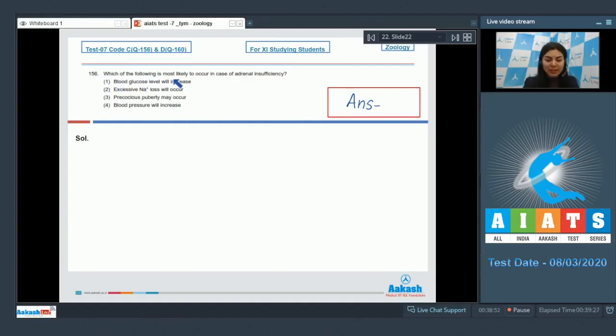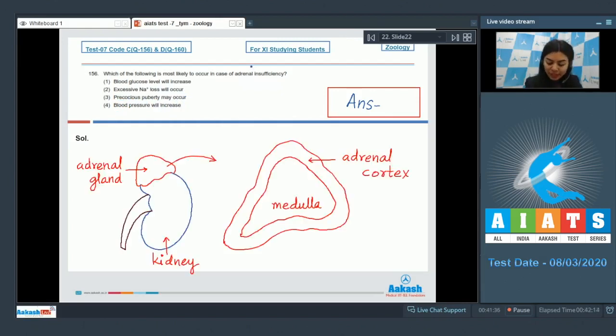Question 156: Which of the following is most likely to occur in case of adrenal insufficiency? Blood glucose level will increase, excessive sodium loss will occur, precocious puberty may occur, or blood pressure will increase. In the question, the body is suffering from adrenal insufficiency.